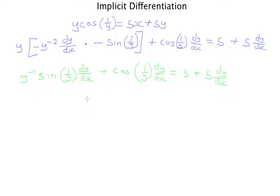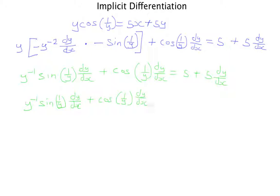Our aim now is to get all the dy/dx terms on one side — preferably the left-hand side. I carry the 5·dy/dx term over to the left, keeping the other terms as they are. So I have y⁻¹·sine(1/y)·dy/dx plus cosine(1/y)·dy/dx minus 5·dy/dx equals 5. We now have three dy/dx terms, so the next step is to factor out the dy/dx.